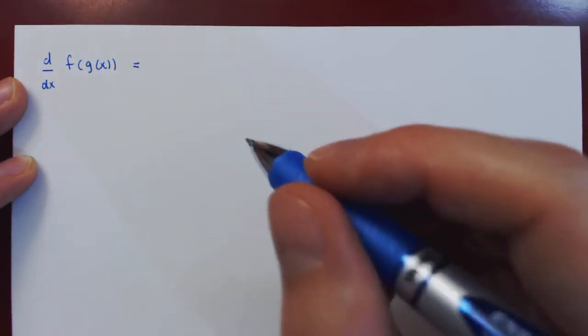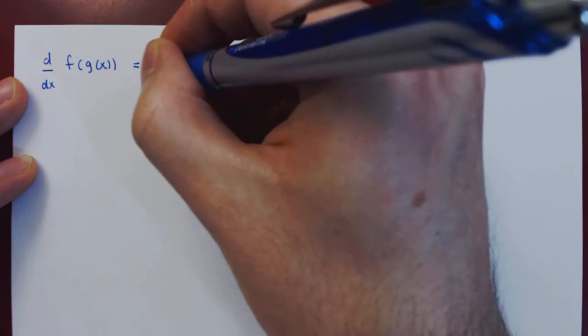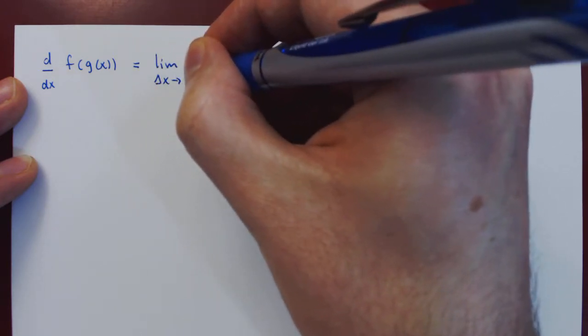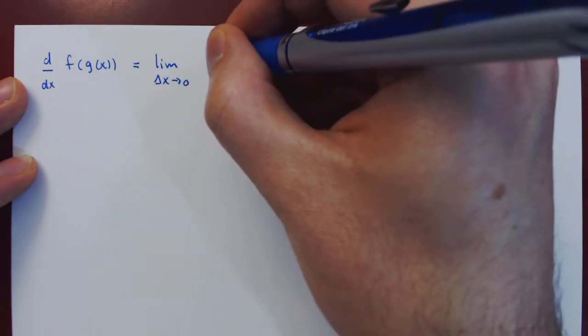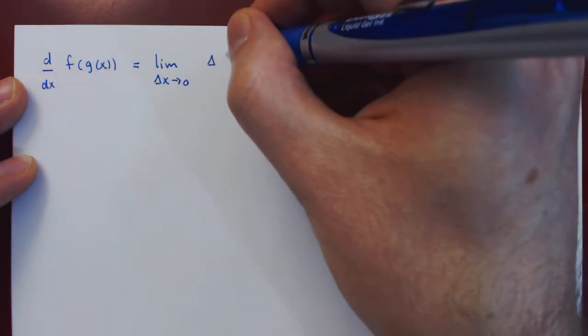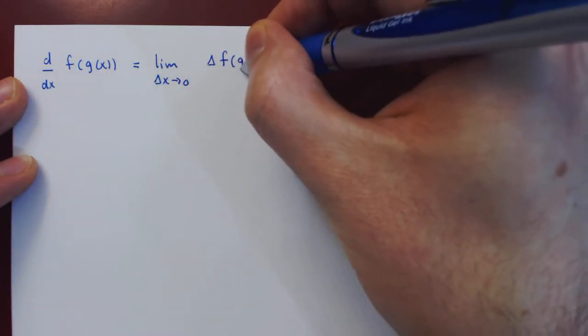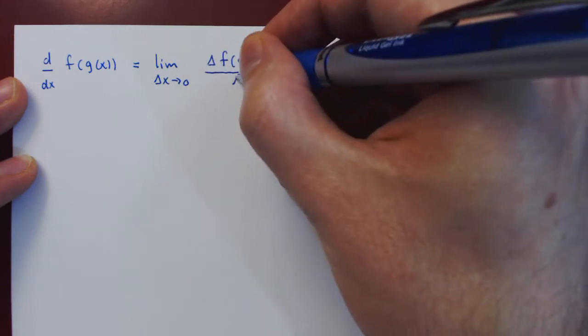So again, we go back to the definition of the derivative, which is the limit as delta x approaches 0 of the ratio in the change in the function, so f of g of x, versus the change in x.